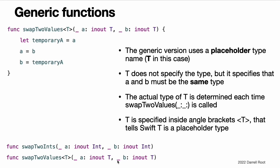Whatever T represents, the actual type to use in place of T is determined each time the swapToValues function is called. The other difference between a generic function and a non-generic function is that the generic function name swapToValues is followed by the placeholder type name T inside angle brackets. The brackets tell Swift that T is a placeholder type name within the swapToValues function definition. Because T is a placeholder, Swift does not look for an actual type called T. The swapToValues function can now be called in the same way as swapToInts, except that it can be passed two values of any type as long as both values are of the same type as each other.